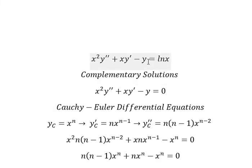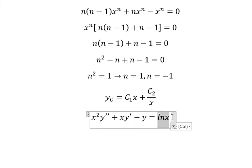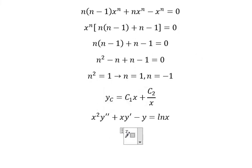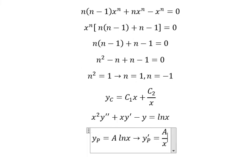Now let's find the particular solution. Because we have ln(x) on the right-hand side, the particular solution yp should be A times ln(x). Taking the first derivative of yp gives us A over x, since the derivative of ln(x) is 1 over x.